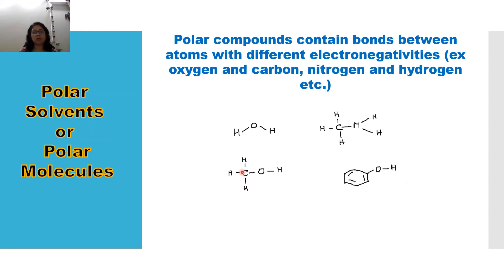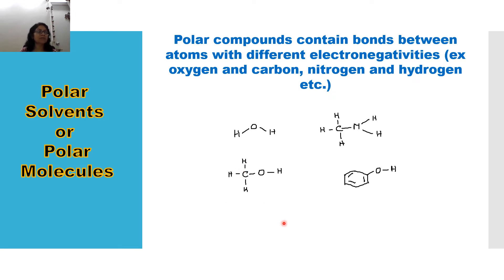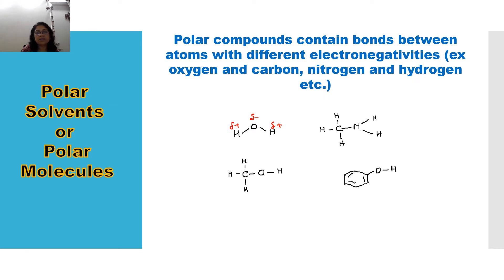What are polar solvents? Just by looking at the molecules, we can predict whether a solvent will behave as a polar solvent. Polar solvents contain bonds between atoms having different electronegativities, like oxygen-hydrogen, carbon-oxygen, and nitrogen-hydrogen bonds. For example, in the water molecule, oxygen is more electronegative than hydrogen, so oxygen pulls the bonding electrons towards itself — oxygen becomes delta negative and hydrogen becomes delta positive, making each bond polar and therefore the molecule polar.